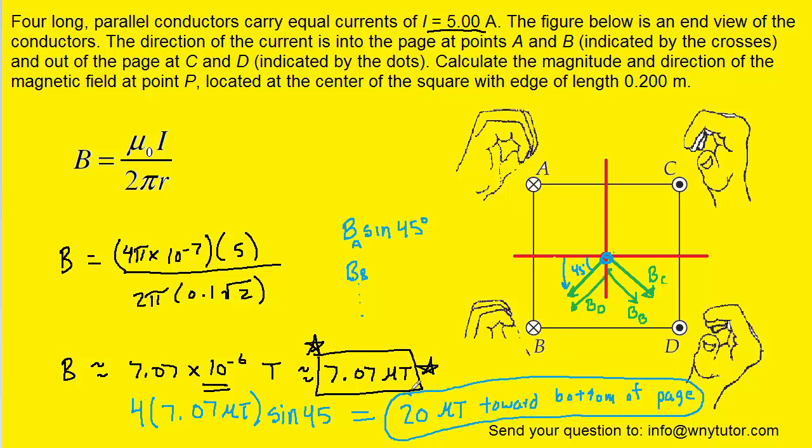So just keep in mind once again that the X components, we had two of them pointing to the left and two of them pointing to the right. Those all cancel each other out. It was the four Y components that all pointed downward. And so we had to include all four of them in our calculation. And that's why we multiplied our magnetic field strength by 4 and then the sine of 45 for that Y component.